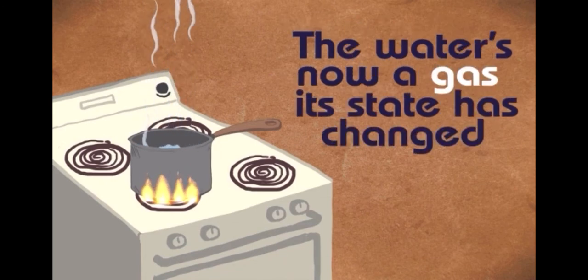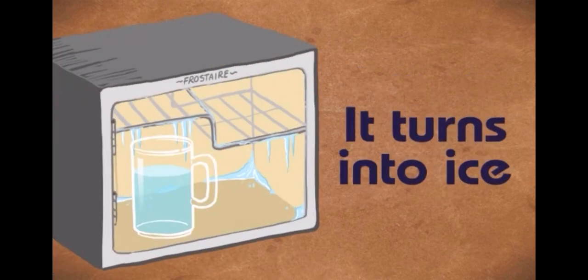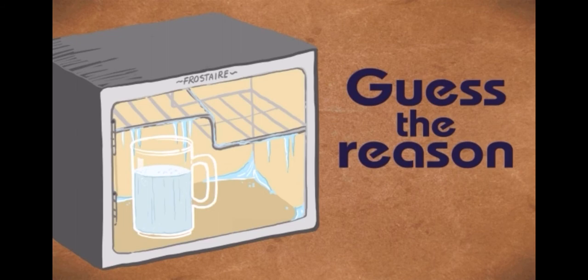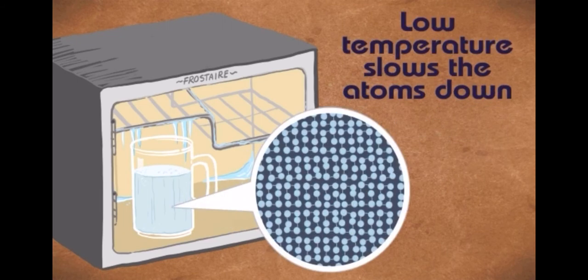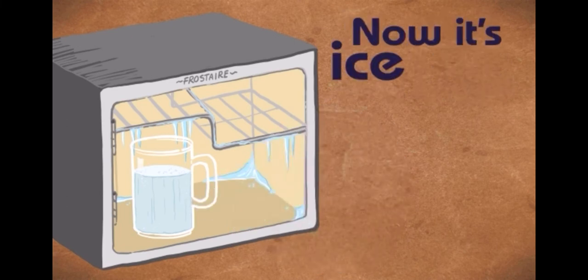Now put that glass of water in the freezer, it turns into ice. Guess the reason? Low temperature slows the atoms down, the water's now a solid. Atoms don't move around, now it's ice.